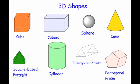It's got eight vertices. Vertices is another word for corners, so it's got eight corners — four on the top and four on the bottom.